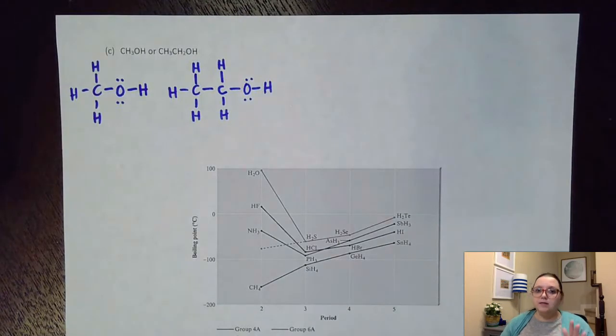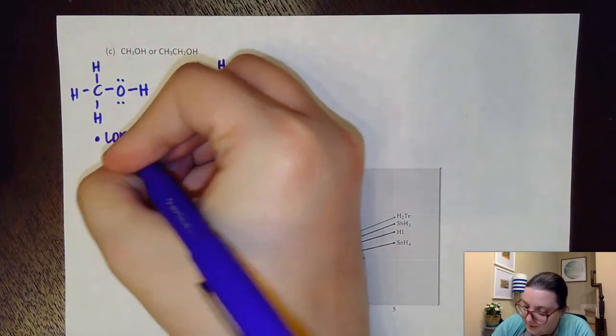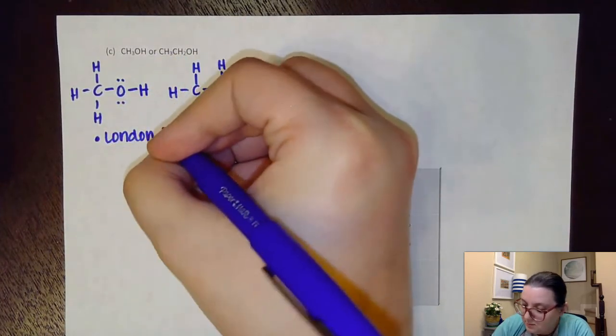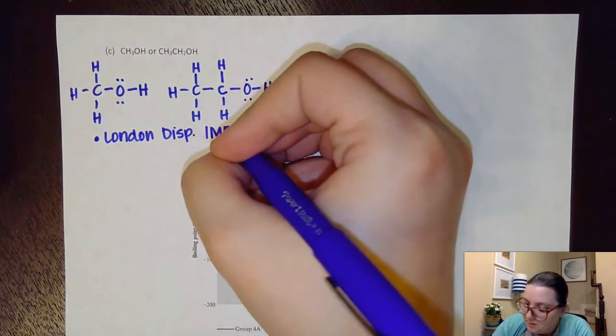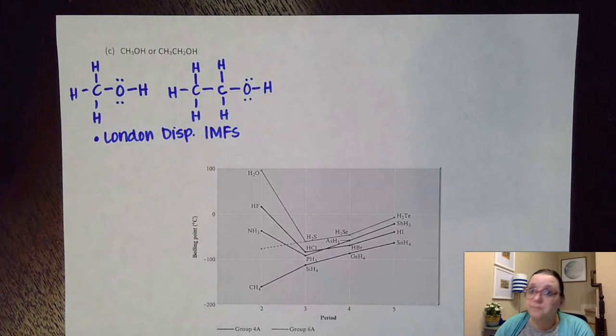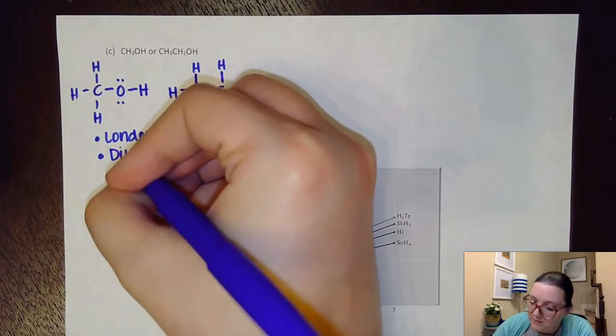So I can see very clearly that both of these are covalent. And so both of these would have London dispersion IMFs. Both are very clearly polar. I have more than just carbon hydrogen chains, and there's no way these are symmetrical. And so I would also have dipole-dipole IMFs.